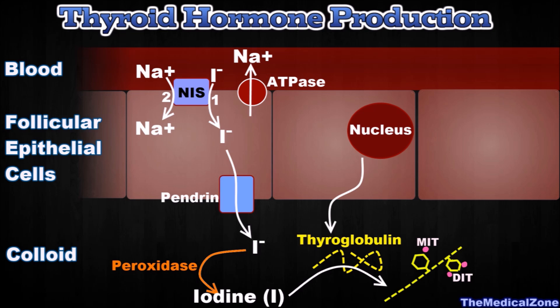This process results in both monoiodotyrosine (MIT) and diiodotyrosine (DIT). In the next step, the MIT and DIT will couple with one another, producing both T3 and T4 molecules — T3 is formed by a MIT combined with a DIT, and T4 by two molecules of DIT combined. Note that T3 and T4 are still attached to the thyroglobulin molecule. Not all DIT and MIT will combine, therefore the thyroglobulin will contain MIT, DIT, T3, and T4. Each thyroglobulin molecule contains up to 30 thyroxine (T4) molecules and just a few triiodothyronine (T3) molecules.